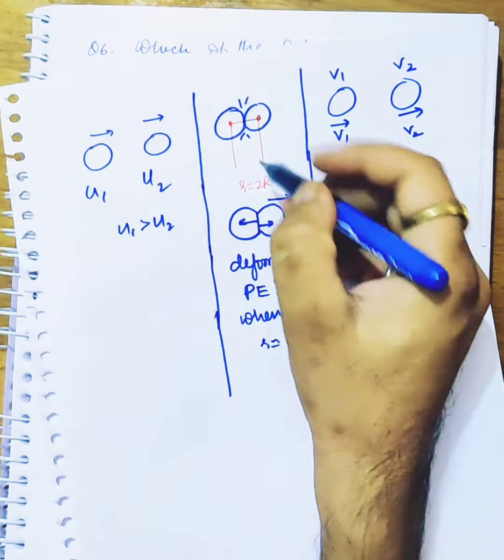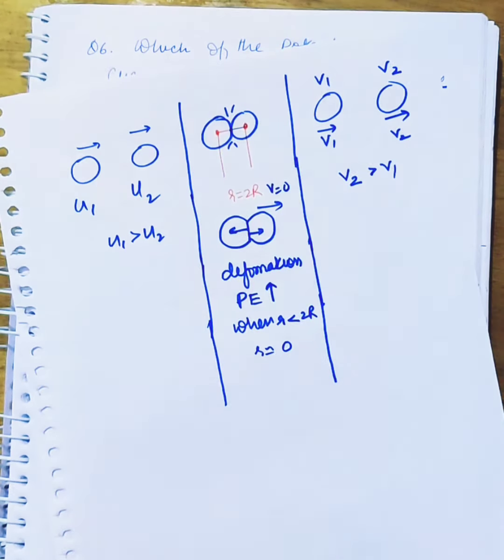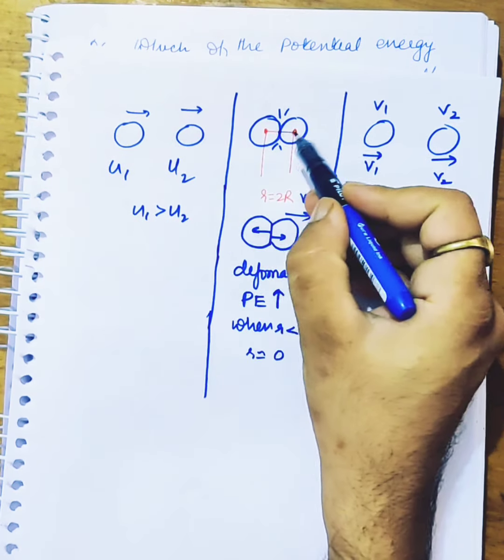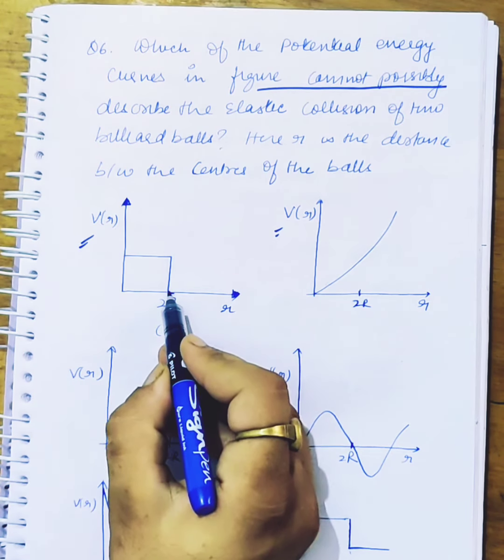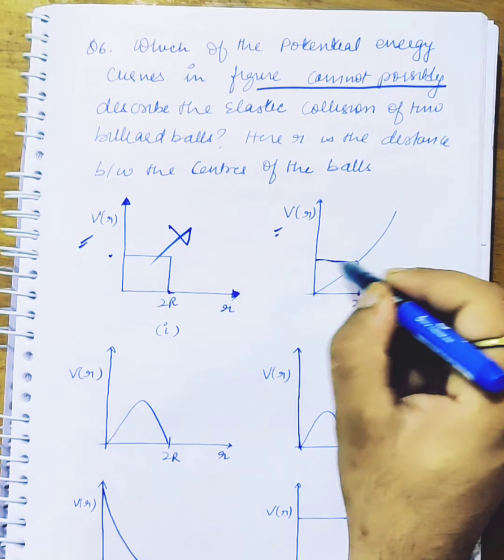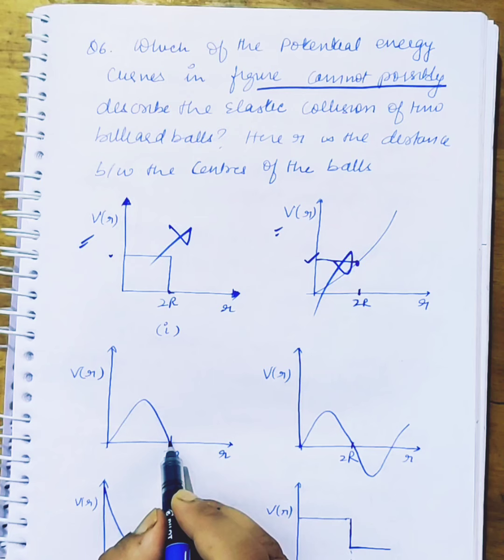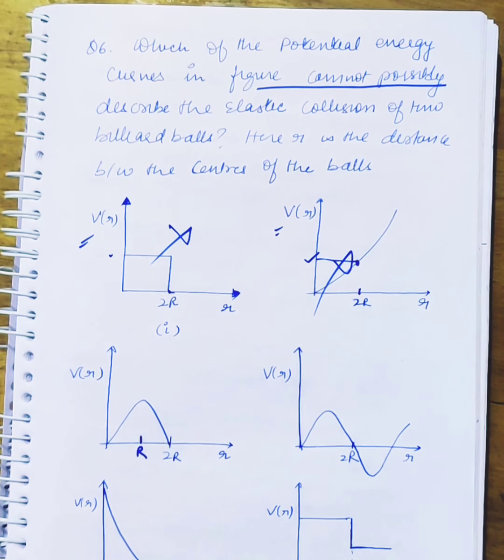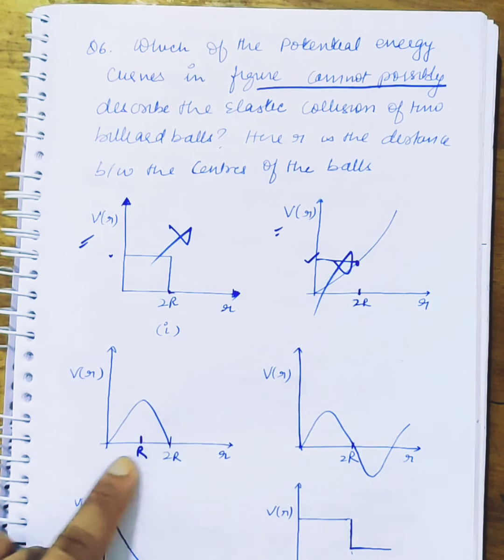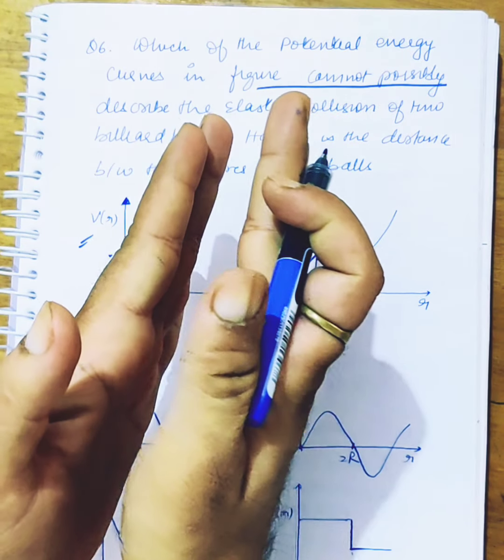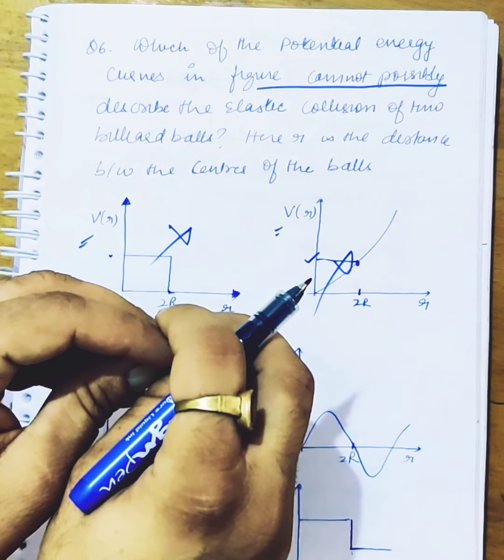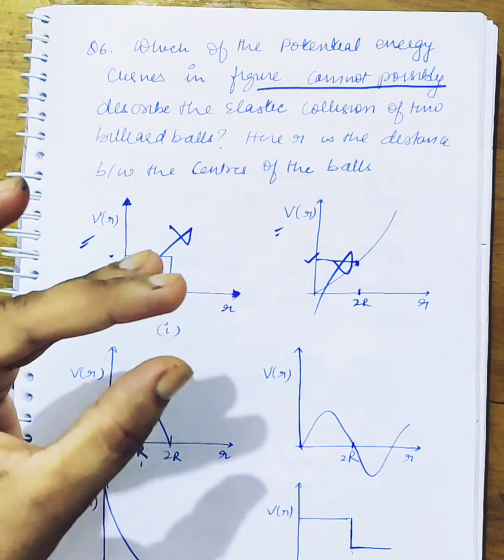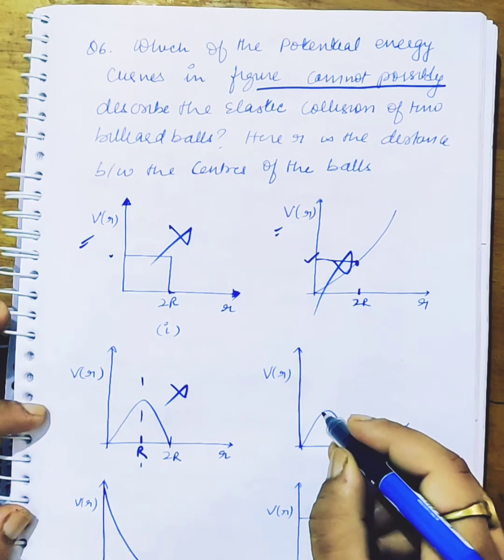Before we analyze the curves, there is a potential energy there. If there is potential energy at 2R, it is wrong. Because there is no potential energy at 2R, it should be zero. The same thing here. This is also false. It was wrong here. It was wrong with 2R.